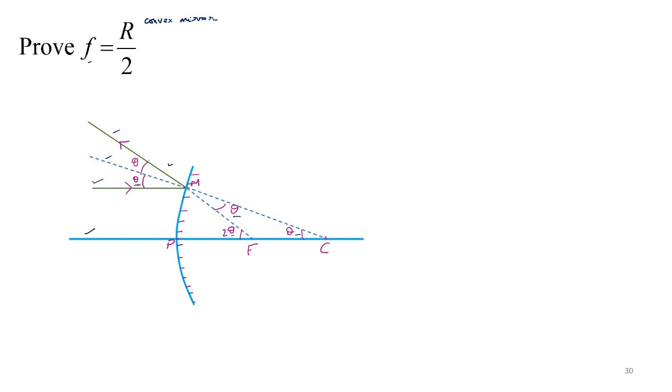And you draw a perpendicular from M to the axis. And foot of the perpendicular is D. And because of the approximation which we are going to consider, theta is very small and all the rays are paraxial rays.